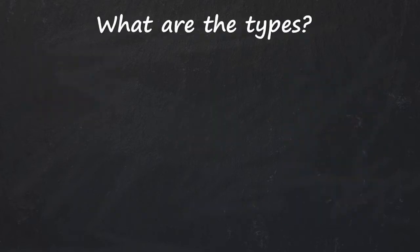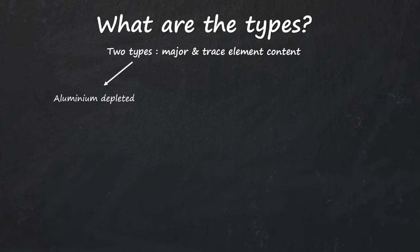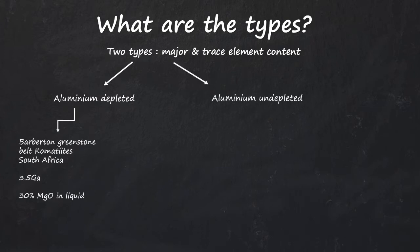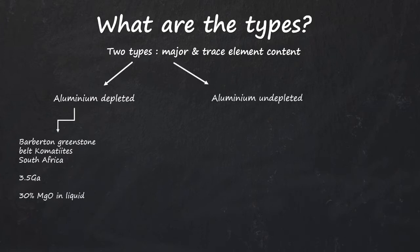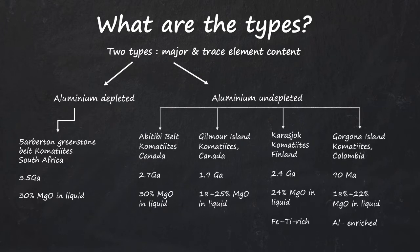What are the types of Komatiites? Komatiites are mainly of two types based on major and trace element contents. First type is the aluminum depleted Komatiites that are found only in the oldest rocks like Barberton. And second type are the aluminum undepleted Komatiites formed in the late Archean, Proterozoic and Mesozoic.